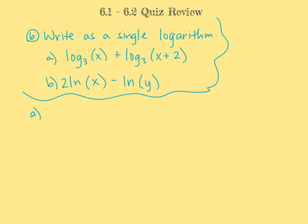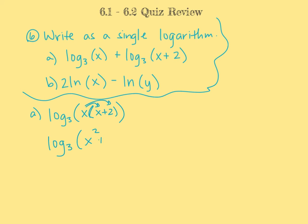In number 6, we want to condense and write as a single logarithm — essentially the opposite of number 5. The base stays as log base 3. We have two logs being added, and the product property says log of u plus log of v equals log of u times v. So we multiply x times x plus 2, and distributing gives log base 3 of x squared plus 2x. We have successfully written that as one single log.